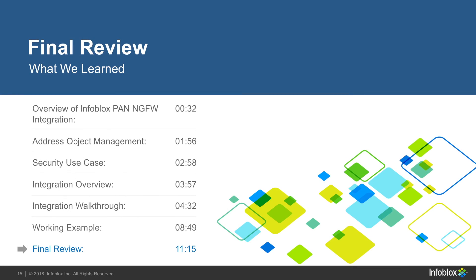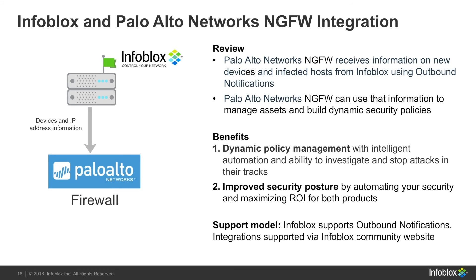If you can take away one thing from this video: with Outbound API, we're now able to respond faster to network changes with the help of Infoblox's ecosystem license. Using Palo Alto Network's Next-Gen Firewall, admins can now automate DNS security with the ability to stop attacks immediately without intervention, maximizing ROI on both Infoblox and Palo Alto Network's Next-Gen Firewall.